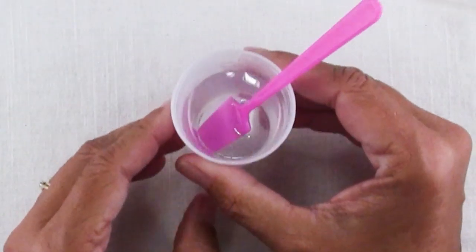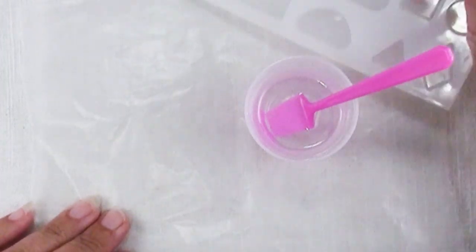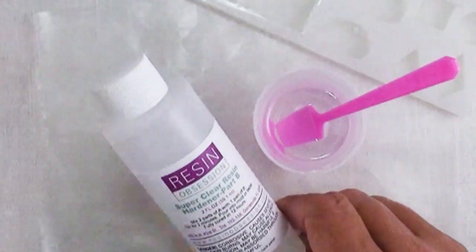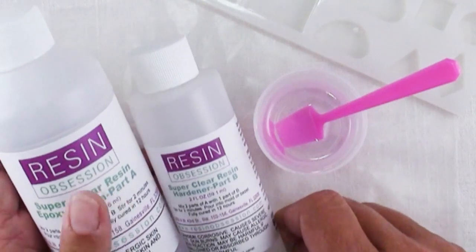Then it's time to mix up some resin. I've got a piece of wax paper I'm going to put down here just to protect my work surface. Every resin is a little bit different and resin is one of those things you cannot wing it. You should not wing it.